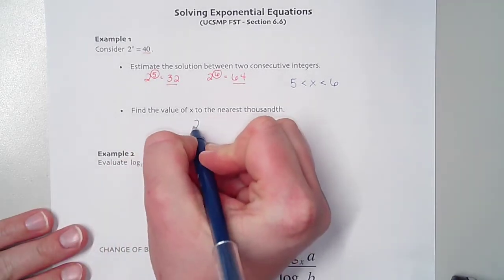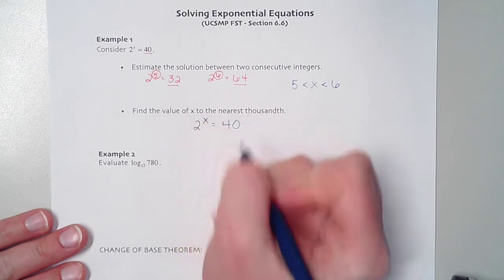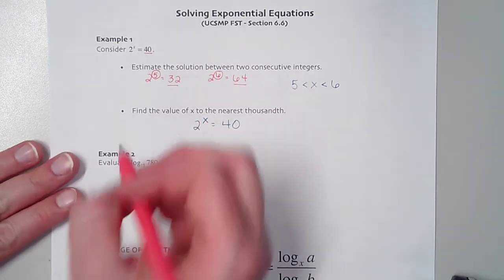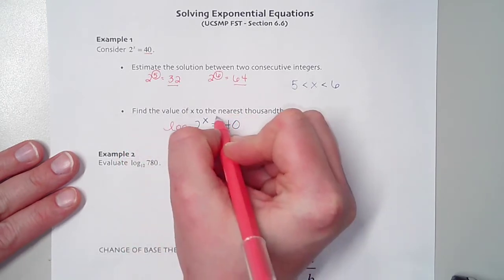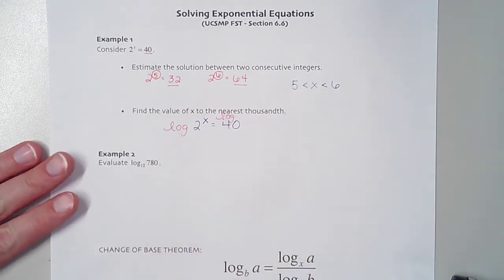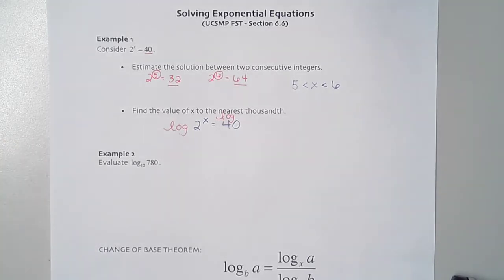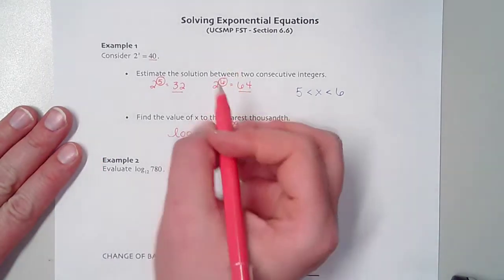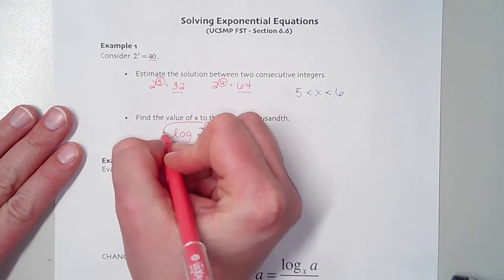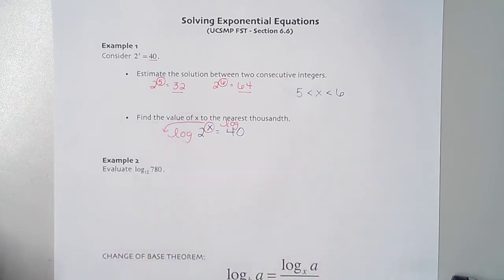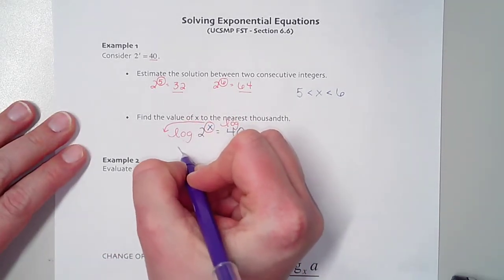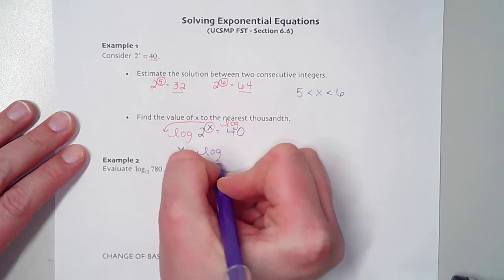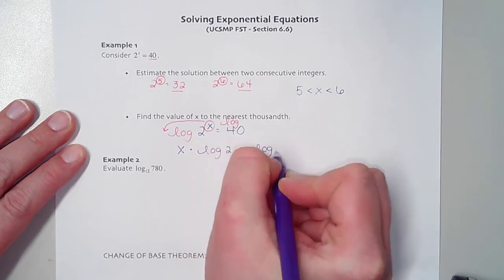Let's talk about how to actually solve this thing. Let me take this equation, 2 to the x equals 40. What I'm going to do is take a log on both sides. You can do a log with any base you want, but I'm going to recommend that we use base 10, because base 10 we can use our calculator for. I'm going to take a common log on each side.